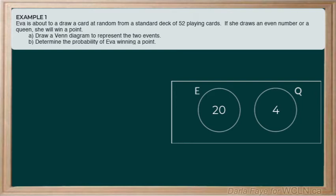Part B asks us to determine the probability of Eva winning a point. If we refer back to the initial problem, it says if she draws an even number or a queen, she will win a point. So essentially, we are trying to figure out the probability of drawing an even number or a queen. Recall that when we use that word or, we must add the possibilities or the probabilities in this case together. That's evident in the equation that I'm going to pull up right now.